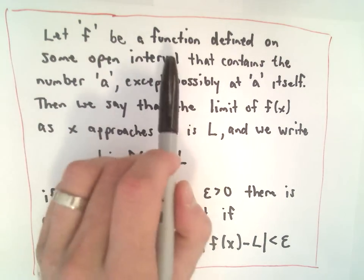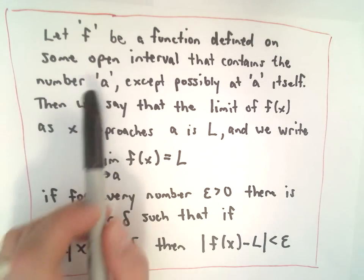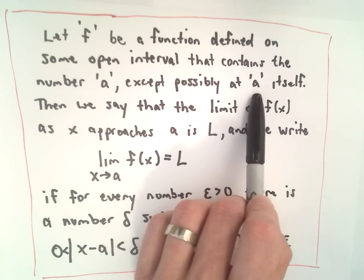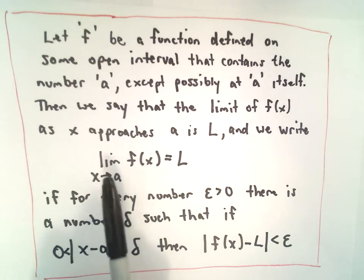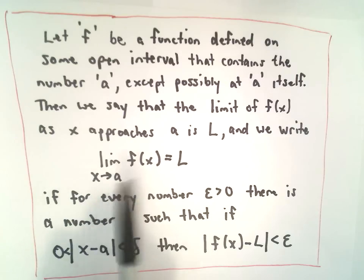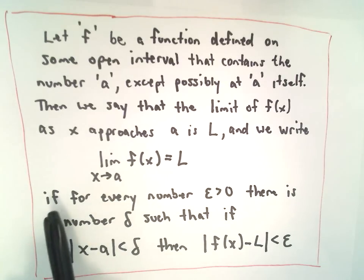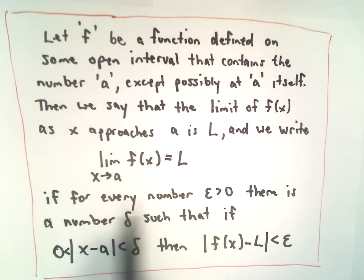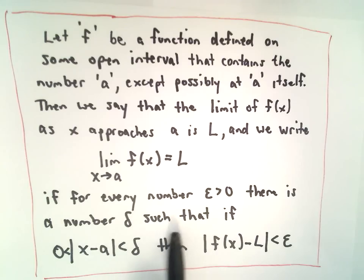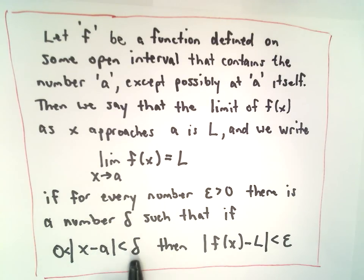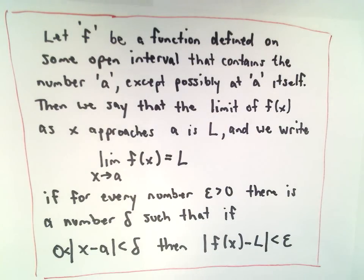Here's the definition. It says: let f be a function defined on some open interval that contains the number a, except possibly at a itself. Then we say the limit of f of x as x approaches a is L, and we write the notation — the limit as x approaches a of f of x equals L. Here's the technical part that kind of bothers people: if for every number epsilon greater than zero, there's a number delta such that if the absolute value of x minus a is greater than zero and less than delta, then the absolute value of f of x minus L is less than epsilon. What the heck does that last part mean?